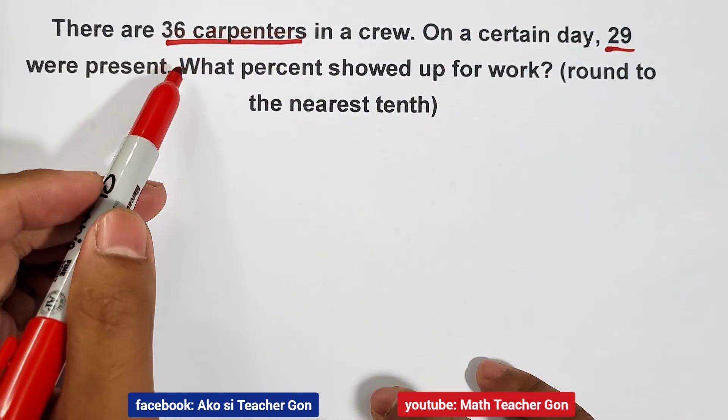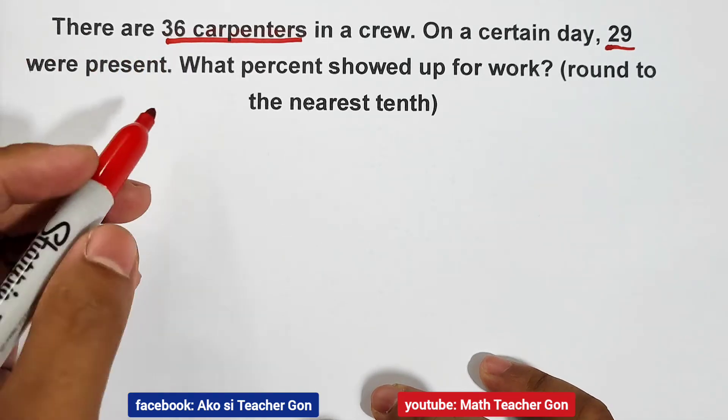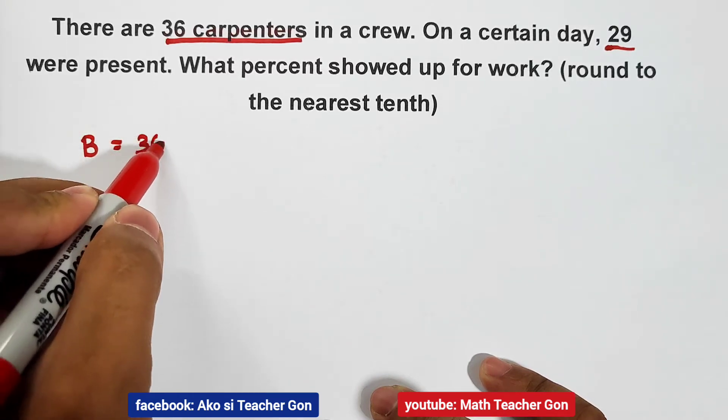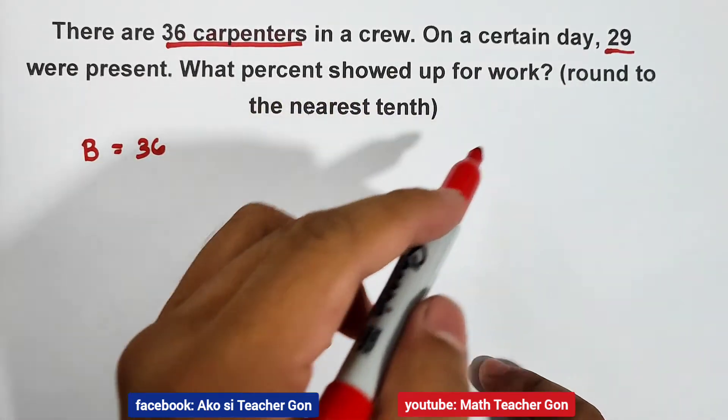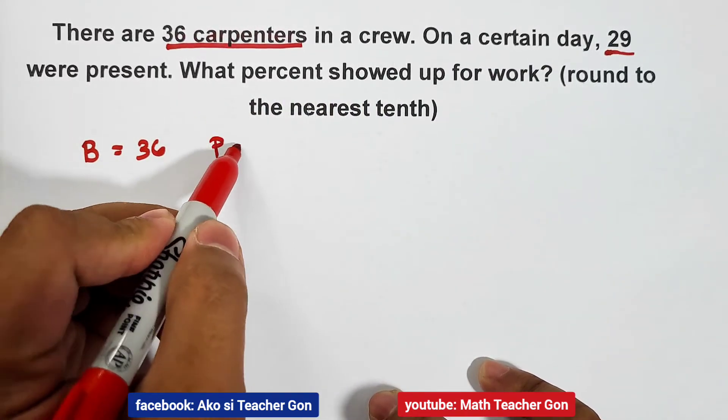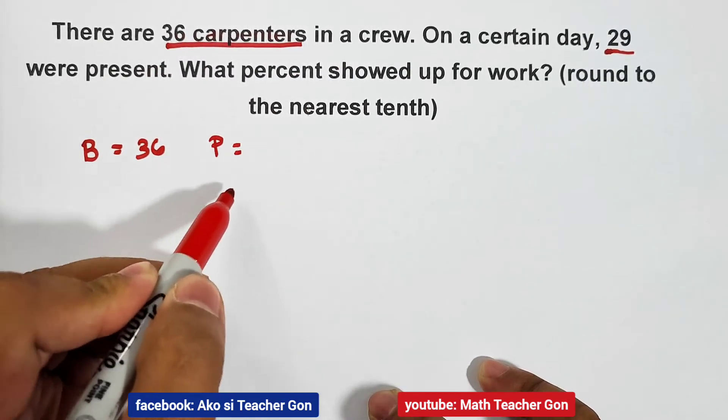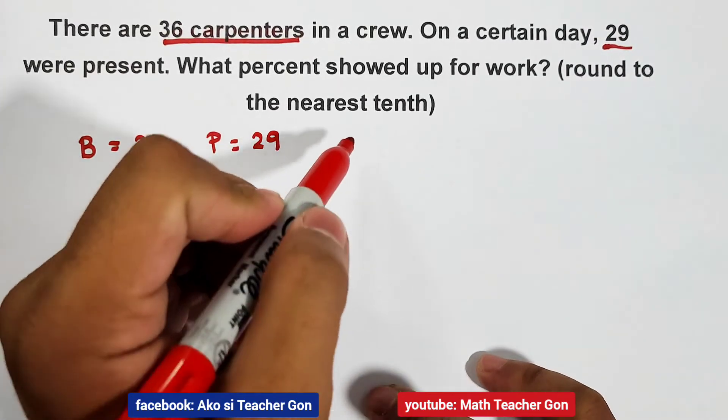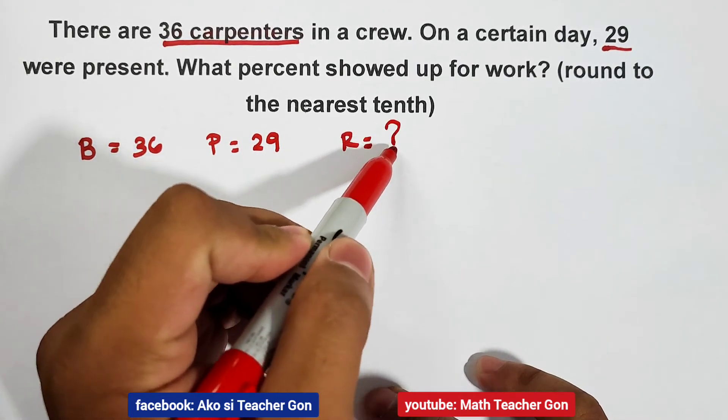So what do the 36 and 29 represent? Since 36 represents the total number of carpenters in their group, that is your base. We have 36, because the base is the 100% or the whole. Next, what about 29? Since the 29 is only part of 36, meaning that is your percentage. We have 29. Obviously, we know what's missing. What's missing is the rate, because we don't have a percentage symbol, and that's what we need to find.